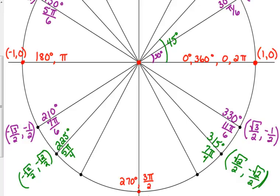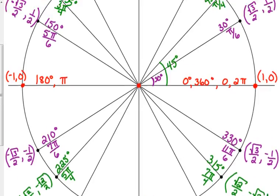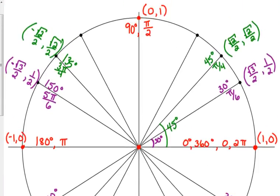Now, the last one we're going to fill in — we're only missing one point in each quadrant. That one is going to be 60 degrees. This is 60 degrees from the axis, so we've got 60 degrees which is equivalent to π over 3. And the neat thing about this is it reverses — the coordinates swap compared to the 30-degree point.